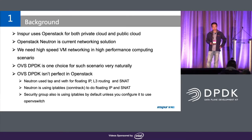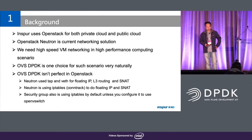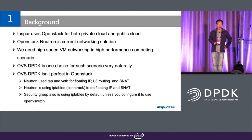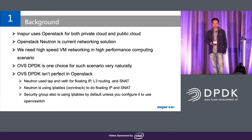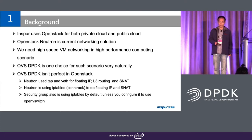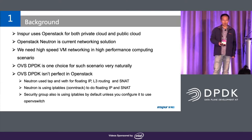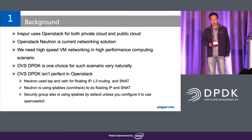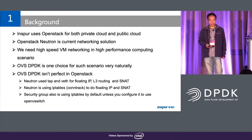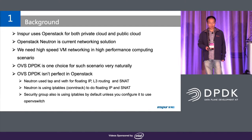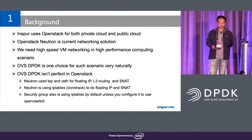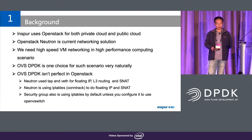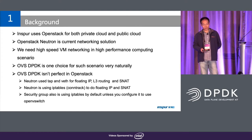Let me introduce our background. In eSport, we use OpenStack for private cloud and public cloud. OpenStack is the only networking solution. In some cases, we need a high performance network, so naturally we want to use OVS-DPDK to accelerate the network.